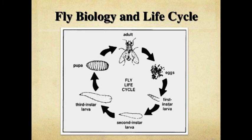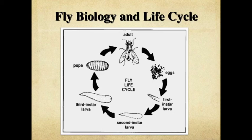Both house flies and stable flies share similar biology and life cycle. An adult fly lays eggs in its preferred habitat. Those eggs hatch and you have several different instars or larvae — maggots. Following the first, second, and third instars, the last instar forms a pupal case, within which the larva transforms into an adult. When ready, it cuts a hole through the pupal case, emerges as an adult, mates, and produces eggs for the next generation.